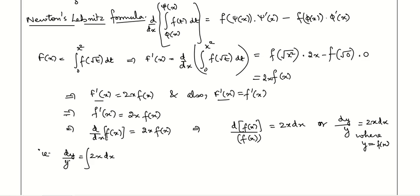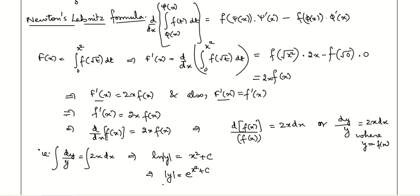Integrating both sides indefinitely: ln|y| = x² + c. Therefore |y| = e^(x² + c). Taking y as positive (since our function is defined positively), we get y = e^(x² + c).